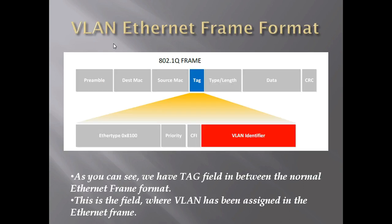Let's take a look at the VLAN Ethernet frame. It looks like a normal Ethernet frame, but the difference is that it has an additional field called a tag. In the tag field, it has a VLAN identifier — for example VLAN 10 or VLAN 20 — along with other characteristics and details, which allows communication with the appropriate VLAN.